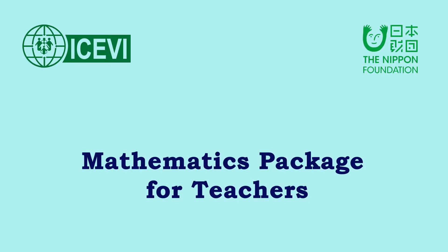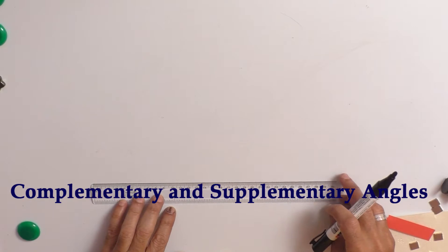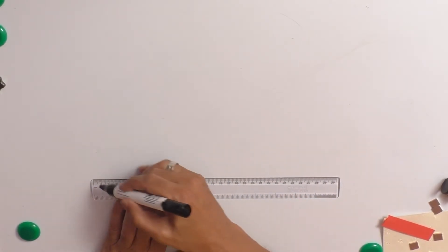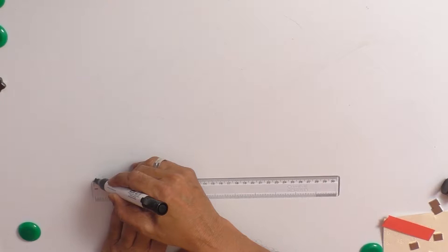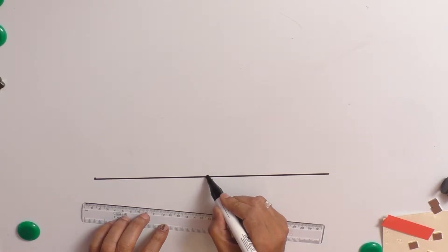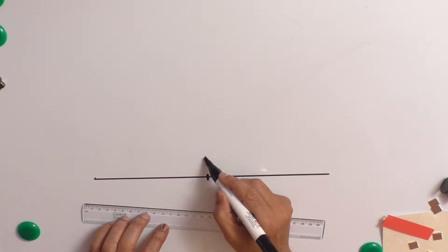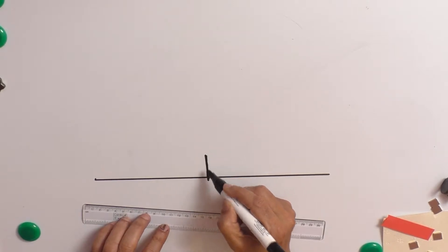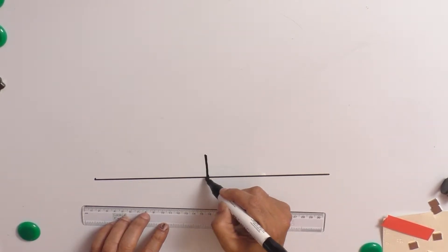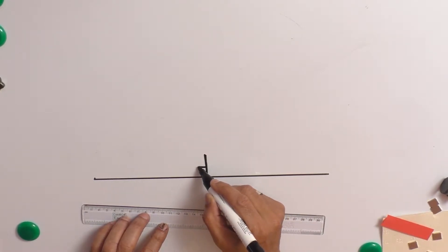This is the ICVI Nippon Foundation mathematics package for teachers. The title of the video is complementary and supplementary angles. Let us assume that we take a straight line. When you take a point on the straight line, you get angles of different types. I have drawn a perpendicular line to the base.